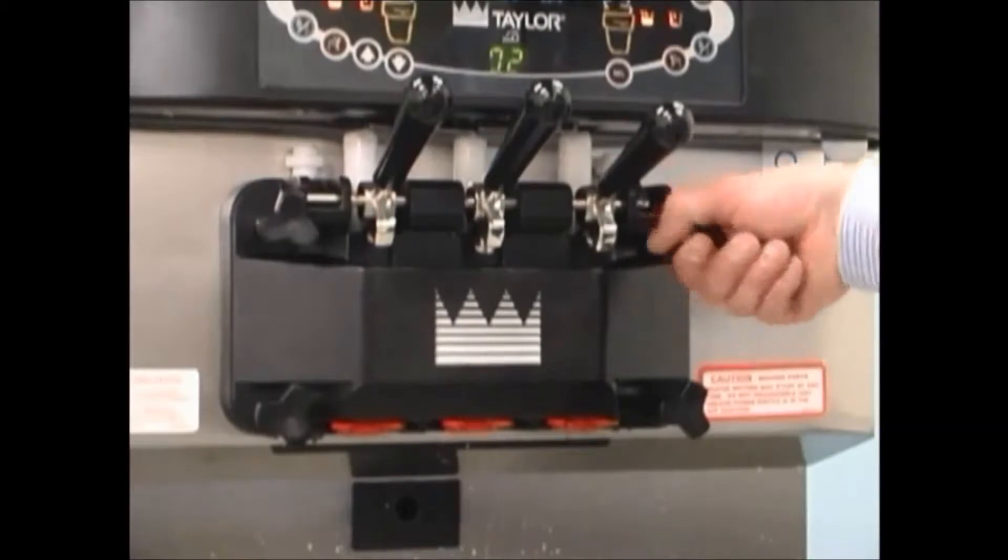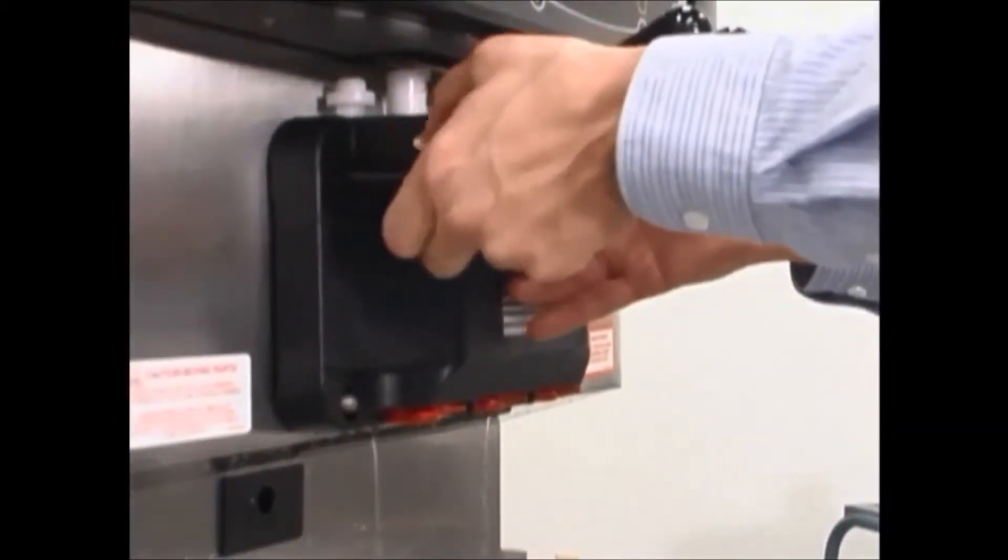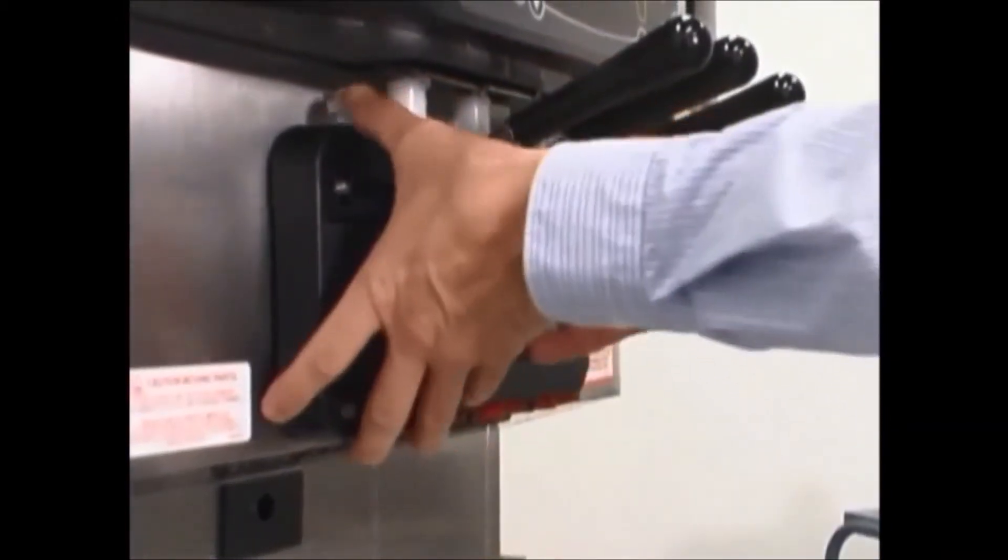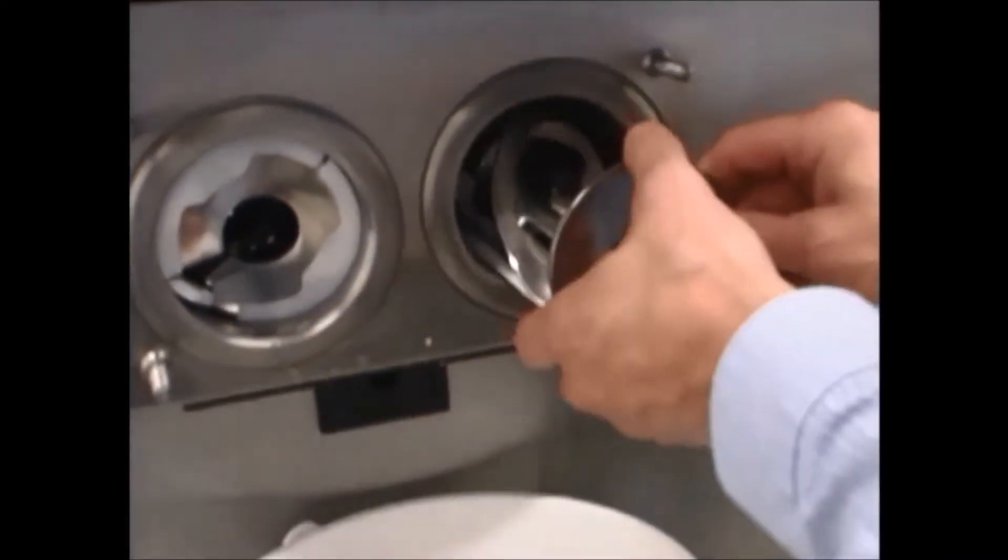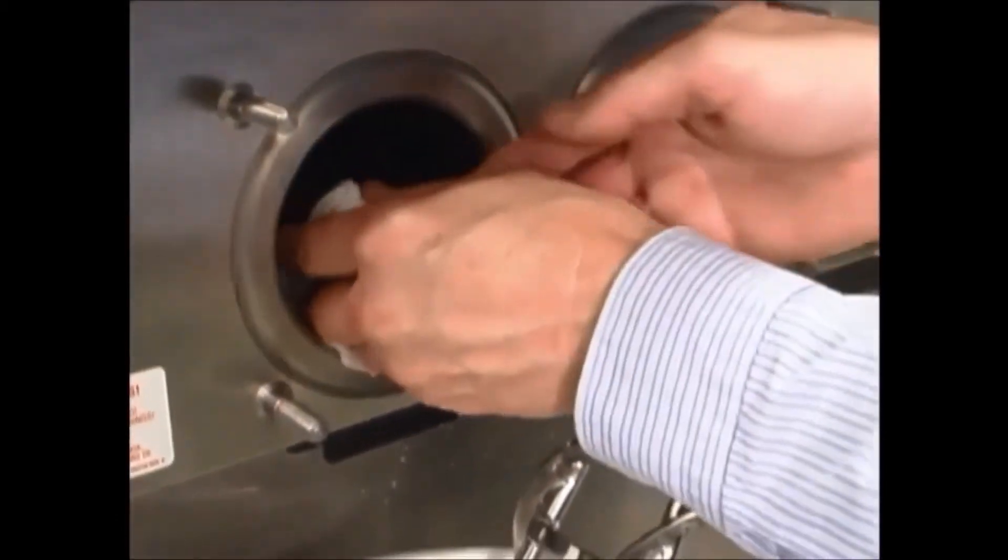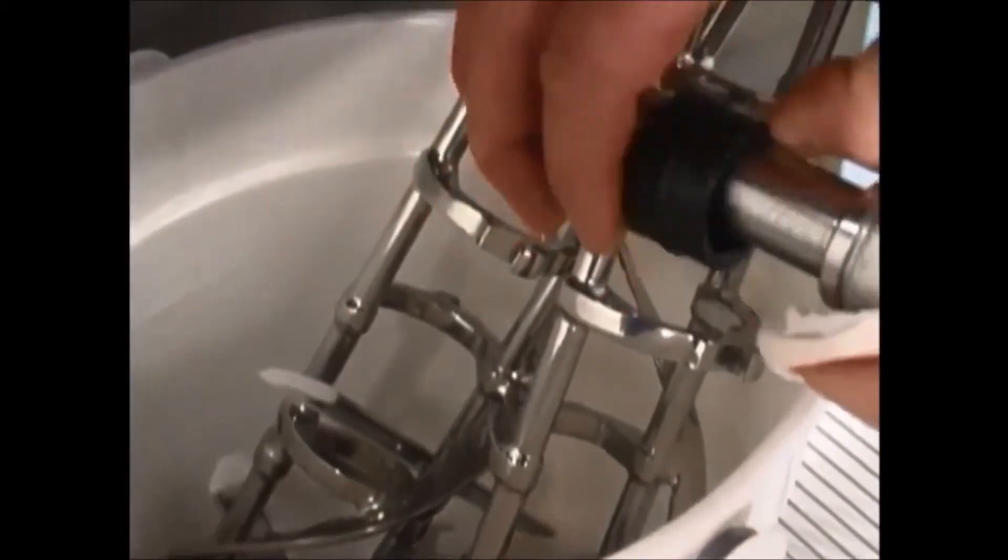To disassemble the machine, first make sure the power switch is off. Remove the hand screws, freezer door, beater and scraper blades, and drive shaft with drive shaft seal from the freezing cylinder. Remove the drive shaft seal from each drive shaft.